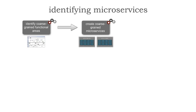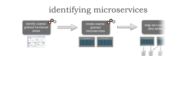We start out coarse-grained and then start analyzing that service, because the third and necessary step is now a data-driven approach. A common question is: when should we start involving data in our services? The answer is right away. Once we've identified some coarse-grained services, we map those database tables to services. Those cylinders don't necessarily mean databases, but rather groupings of tables, and we start mapping those services to those data tables.